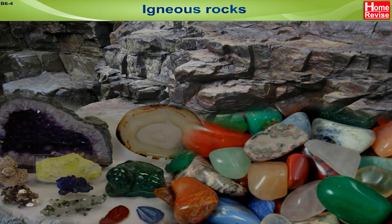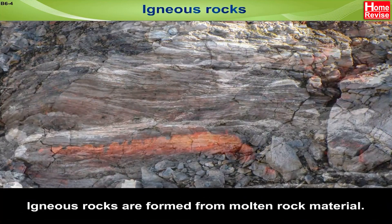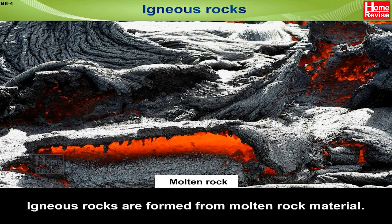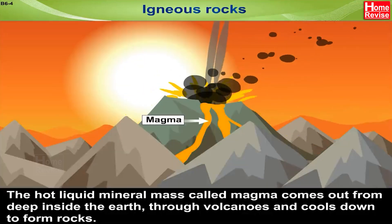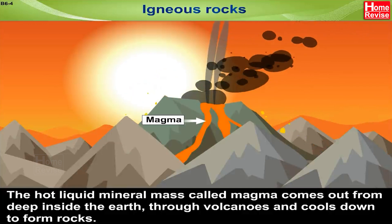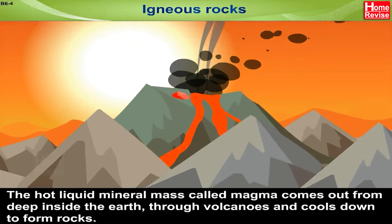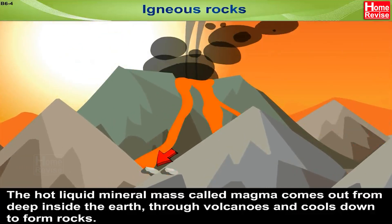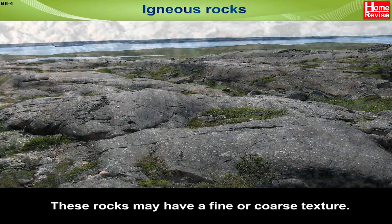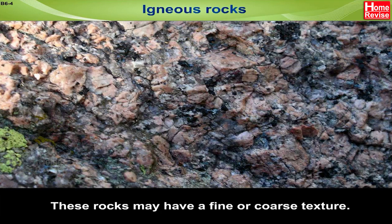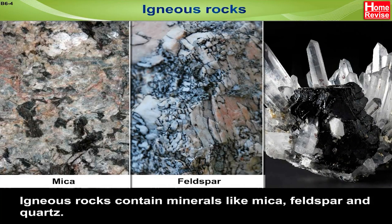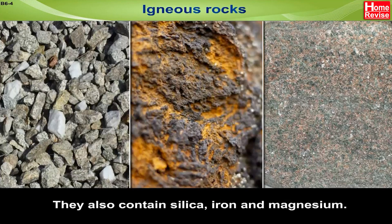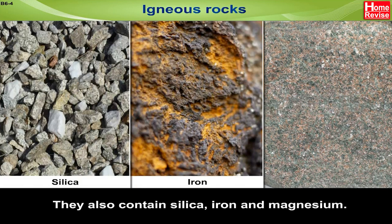Igneous rocks. Igneous rocks are formed by the solidification of molten rock material. The hot liquid mineral mass, called magma, comes out from deep inside the earth through volcanoes and cools down to form rocks. Igneous rocks contain minerals like mica, feldspar and quartz. They also contain silica, iron and magnesium.